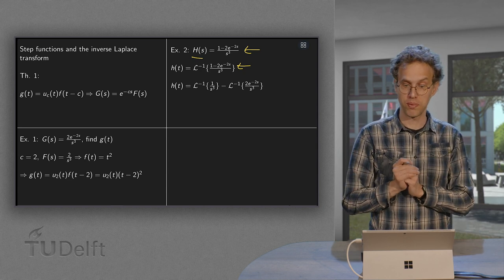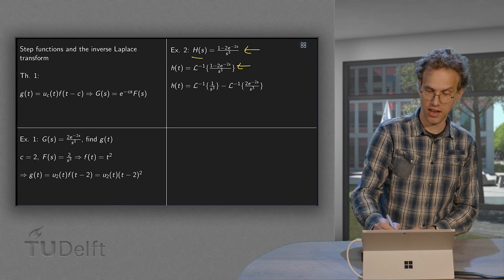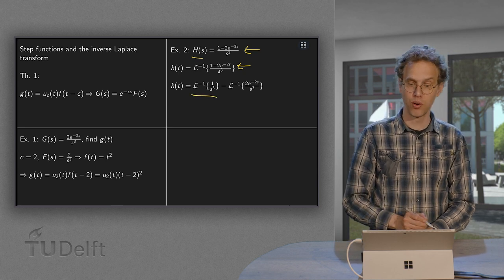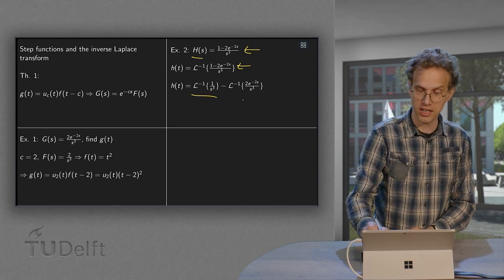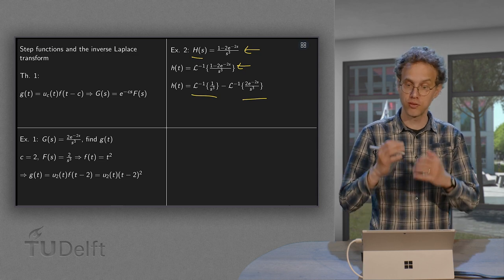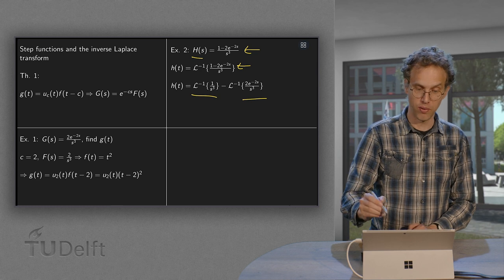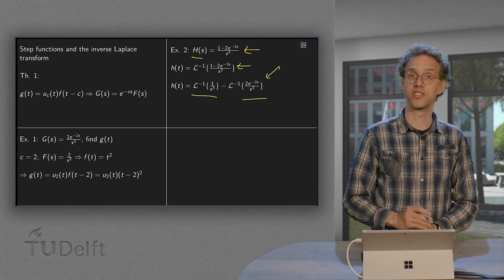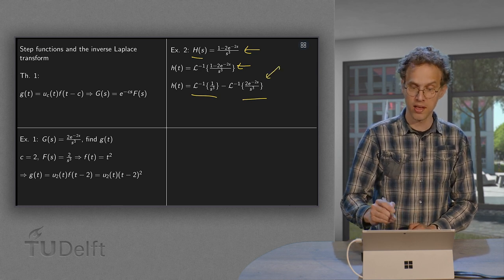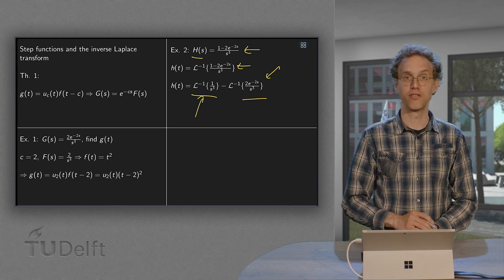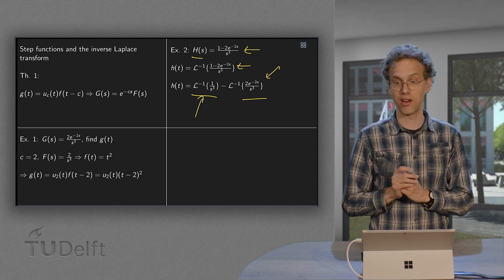Now, the inverse Laplace transform is linear. So this is the inverse Laplace transform of 1 over s cubed minus the inverse Laplace transform of 2 times e to the power minus 2s over s cubed. Now, we already found this inverse Laplace transform in example 1, and this inverse Laplace transform can be found directly using our table.